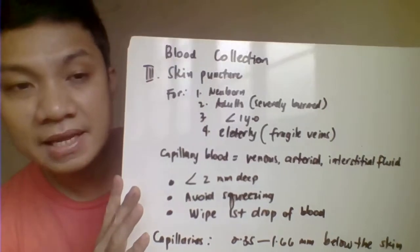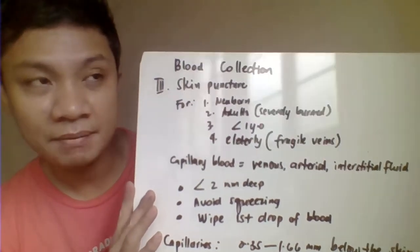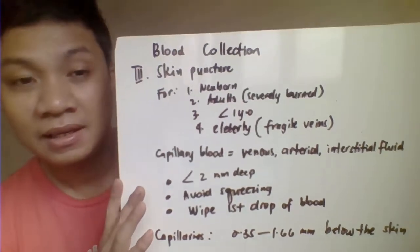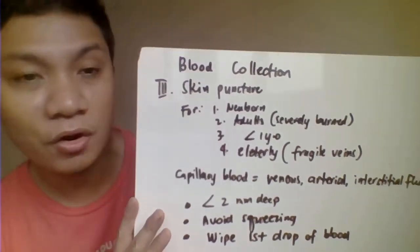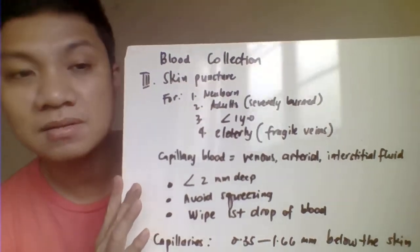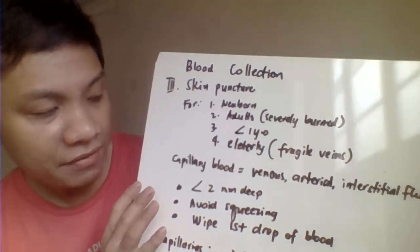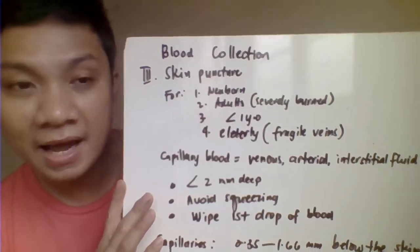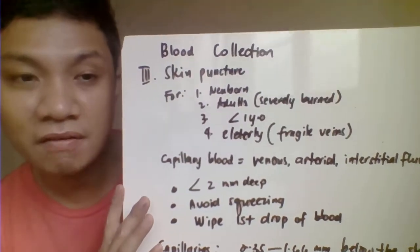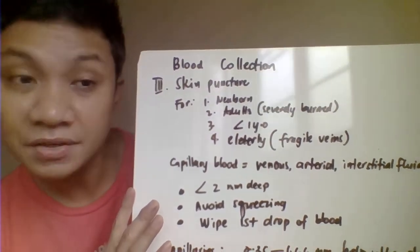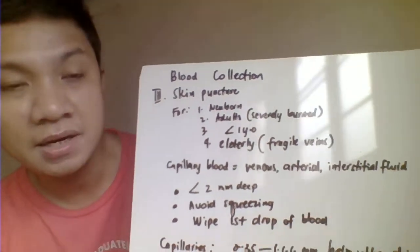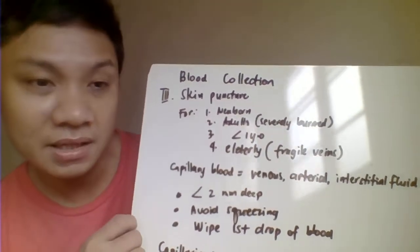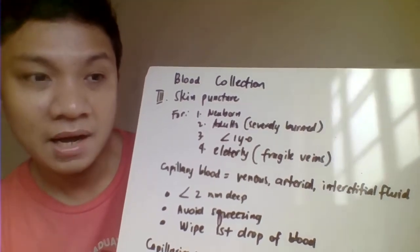The skin puncture is ideally used for newborns or patients less than one year old, and also for adult patients with fragile veins. The blood collected through skin puncture is called capillary blood — it is actually a combination of different blood sources: venous blood, arterial blood, and tissue fluids or interstitial fluids. In contrast, venipuncture gives venous blood, and arterial puncture gives arterial blood.